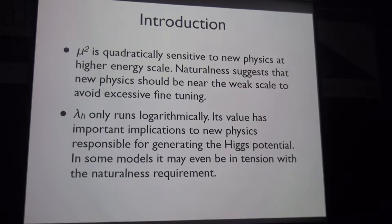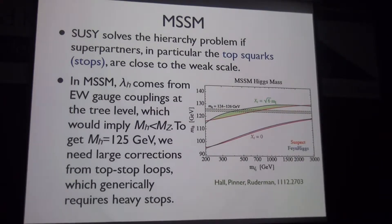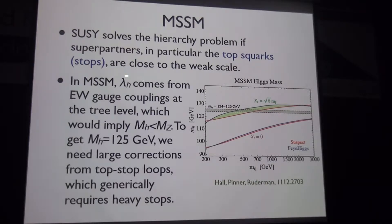In some models, the requirement on the quartic coupling may even be in tension with the naturalness requirement. One well-known example is the MSSM. Supersymmetry solves the hierarchy problem if the superpartners are close to the weak scale, in particular the stop, which has the largest contribution to the Higgs mass. However, in the MSSM the quartic coupling comes from the electroweak gauge coupling, implying at tree level that the Higgs boson mass is less than the Z boson mass, which is obviously wrong.